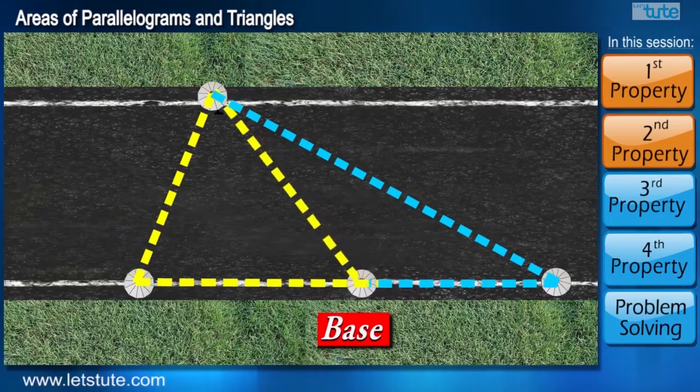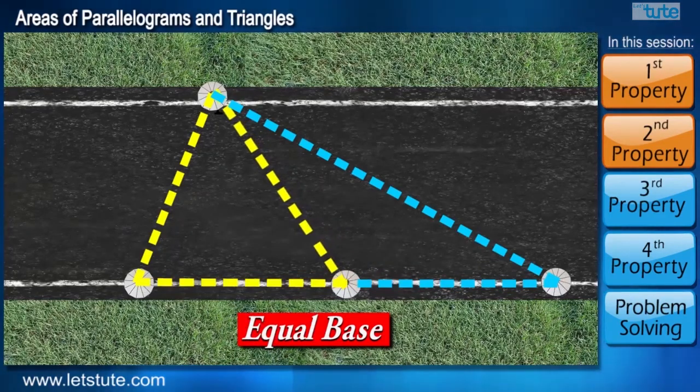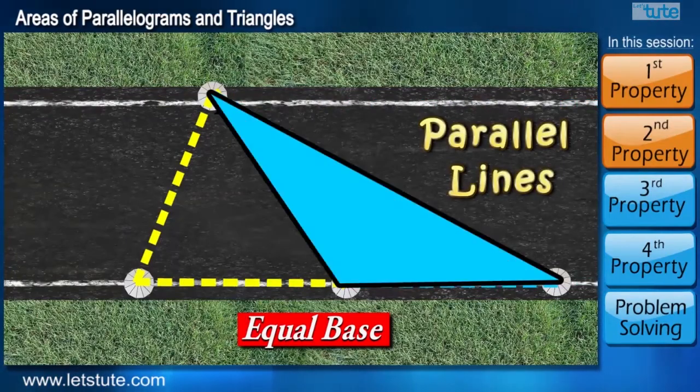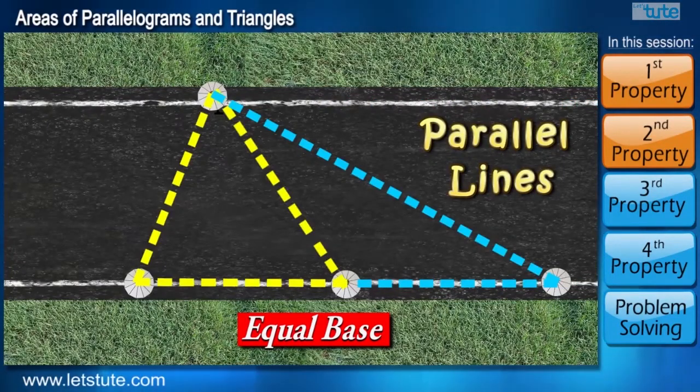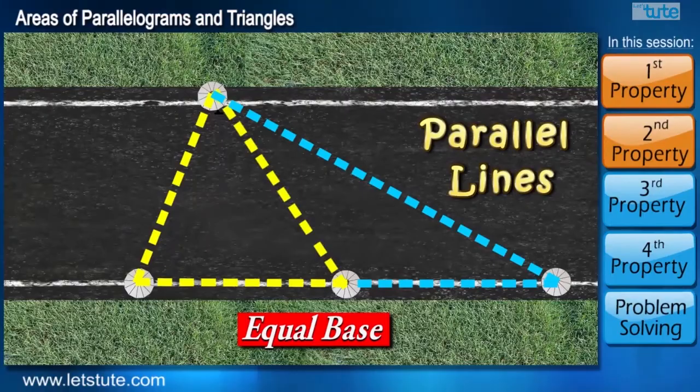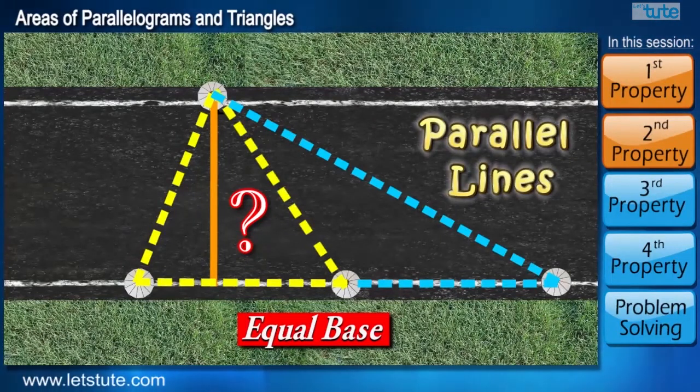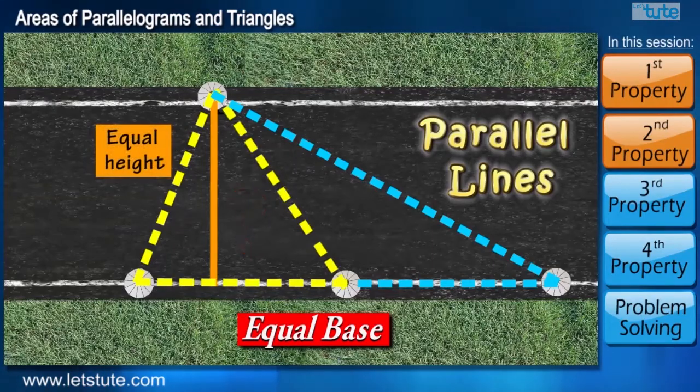Here we spoke about the bases. But suppose the bases were equal and the triangles are still between the same parallel lines with equal areas. So now, what can you say about the height of these triangles? I have already given you a hint.